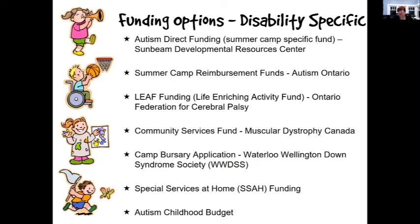I want to talk generally about funding. There are disability-specific funding options. If your child has autism, the Autism Direct Funding is done through Sunbeam Development Resource Centre with a deadline of January 31st to apply. Autism Ontario has funding done by lottery. The LEAF funding is for children with cerebral palsy. There's funding for muscular dystrophy, and a new one this year for Down syndrome covering Waterloo Region and Wellington — it funds expenses above and beyond the cost of camp, including hiring a worker if needed.